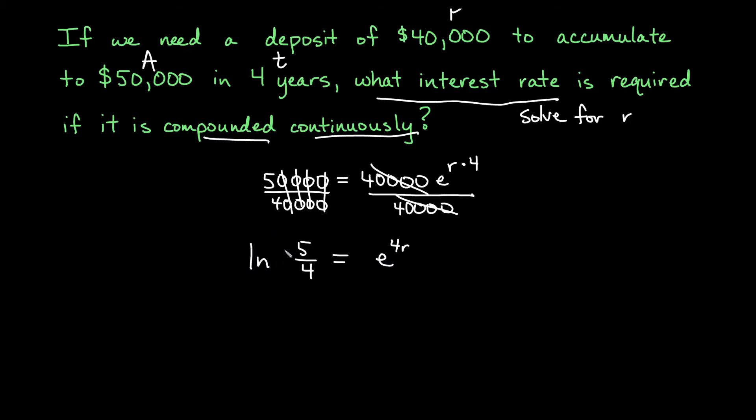So we take the natural log of both sides. That will give us ln of five over four equal to ln of e to the 4r. Remember, the reason that we do that is natural log, log base e, is the opposite operation of exponential base e. So here we're just going to get 4r left on the other side. So we get ln of five over four is equal to four times r.